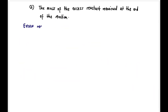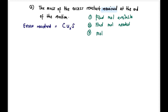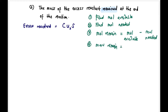Now for the second part — the mass of excess reactant remaining. Since Cu₂S is the excess reactant, the steps are: find mole available for the excess reactant, find mole needed, then mole remain = mole available minus mole needed, because mole available is more than mole needed. Then mass = mole remain × molar mass.